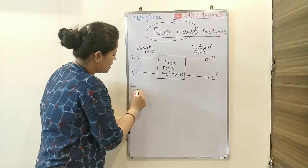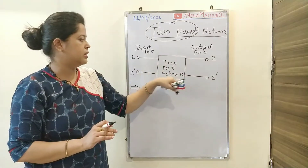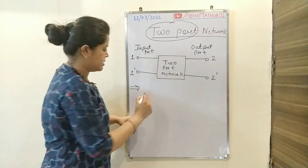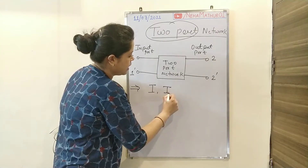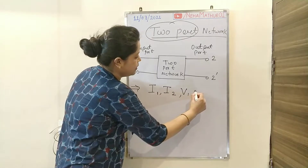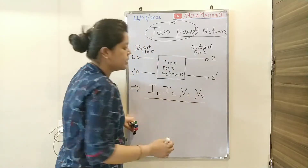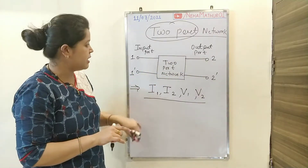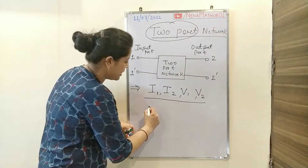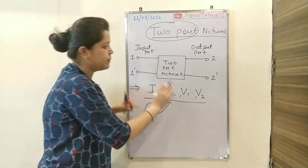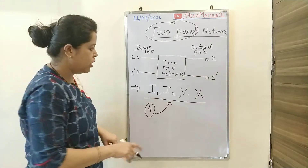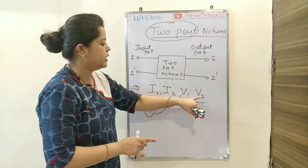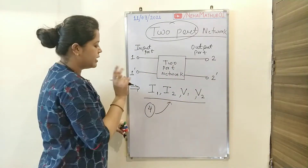The second important thing in two-port network theory is that we have a total of four variables: I1, I2, V1, and V2. We have four variables because we have two ports, and each port has two terminals. So we have two currents, I1 and I2 for both ports respectively, and similarly two voltages for both ports.